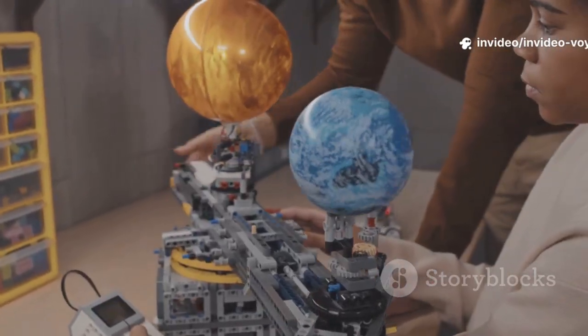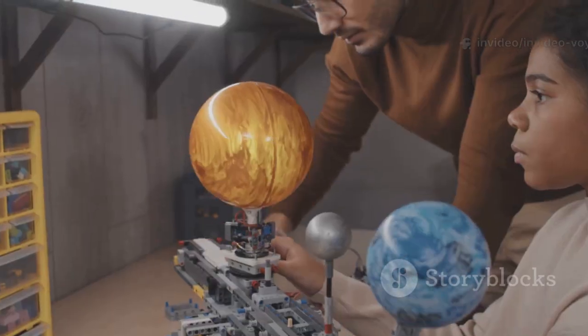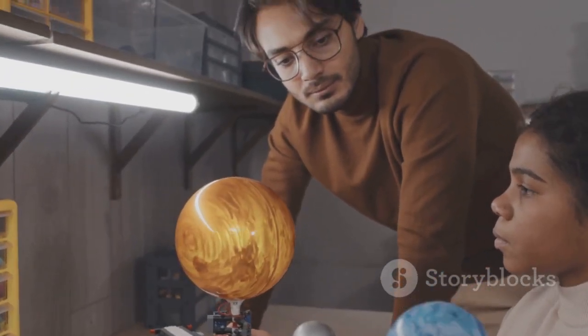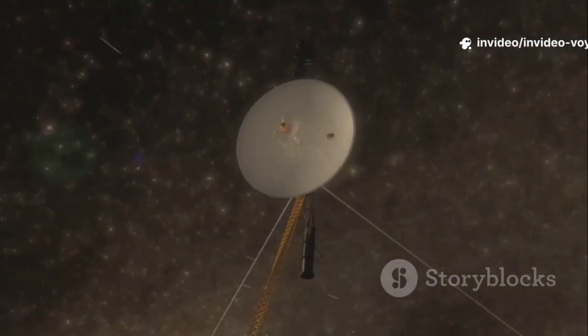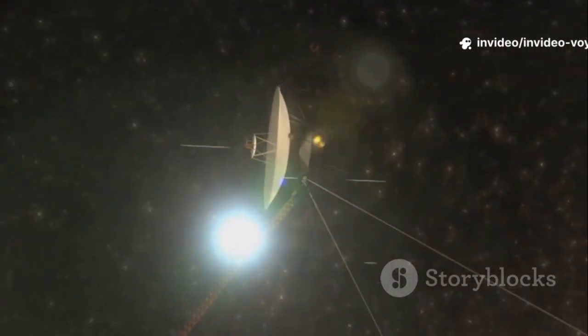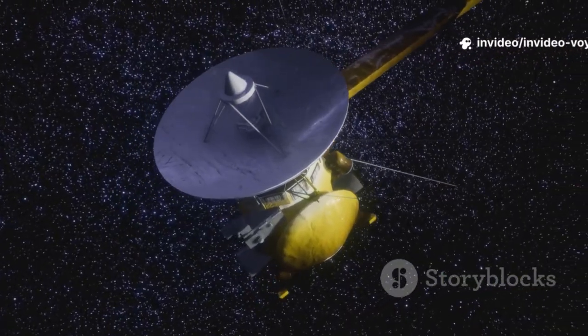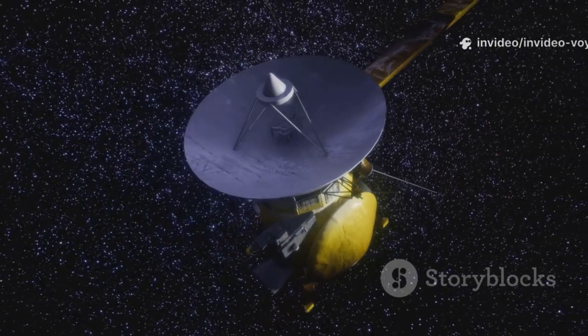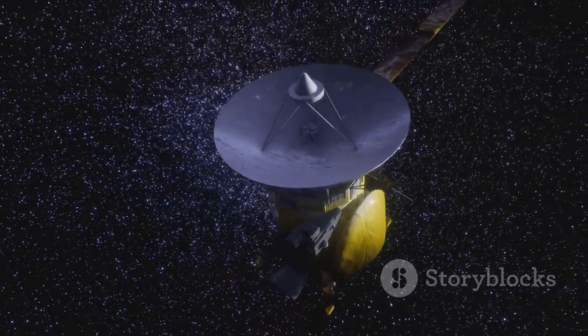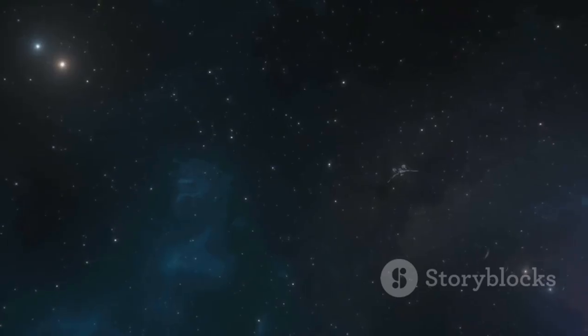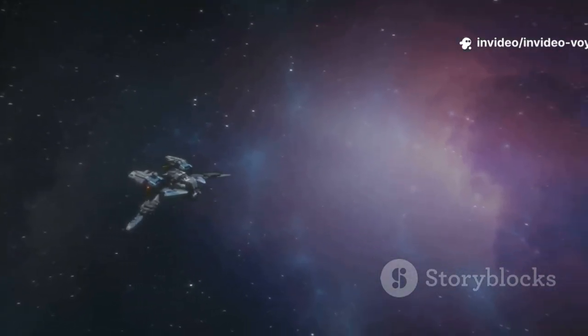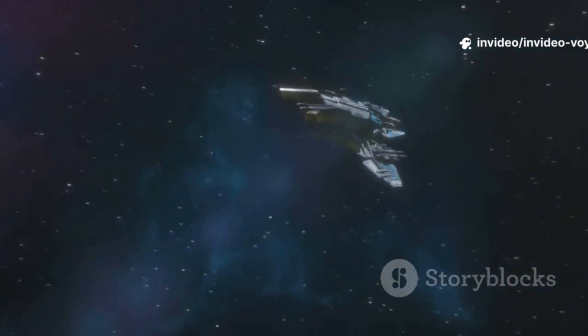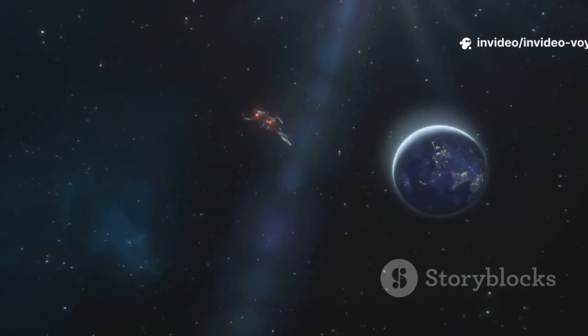The team recalibrated their models, this time with a radical assumption that the spacecraft had actually changed its trajectory. When they plugged in the new numbers, the data suddenly snapped into focus. Everything made sense. The orientation readings, the cosmic ray measurements, the magnetic field data, it all aligned perfectly. The conclusion was inescapable. And it sent a shockwave through the entire scientific community. Voyager 1, our steadfast interstellar explorer, had made a U-turn.